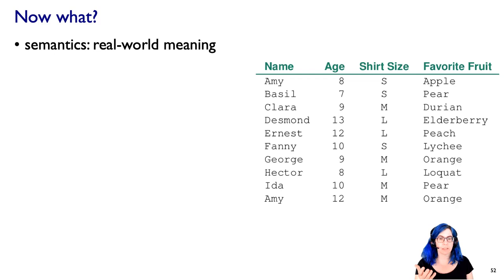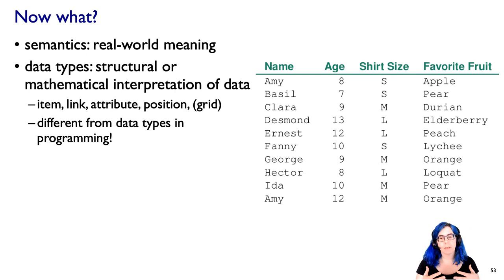So in this case, I'm positing a data set where we have names and ages and shirt size and favorite fruits. Okay, that once we know that, that's knowledge we would need to have externally to the data itself. Sometimes we call these metadata, although one person's metadata is another person's data, so I'm just going to stick with calling this semantics.